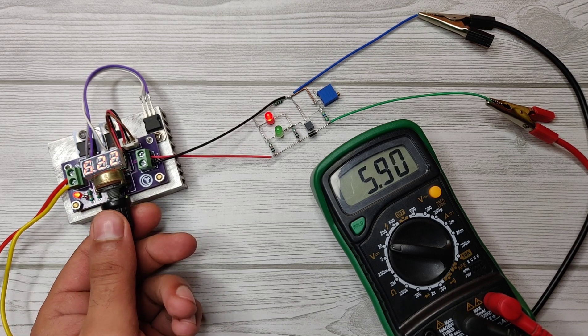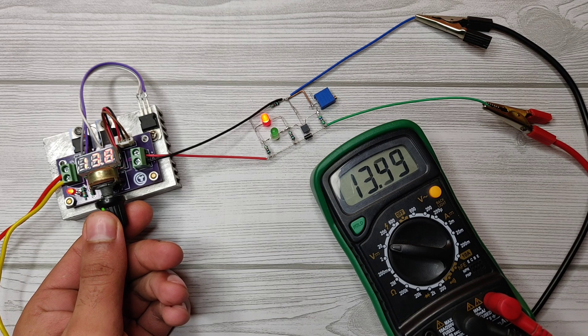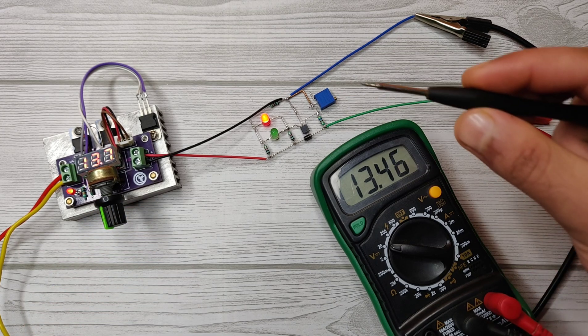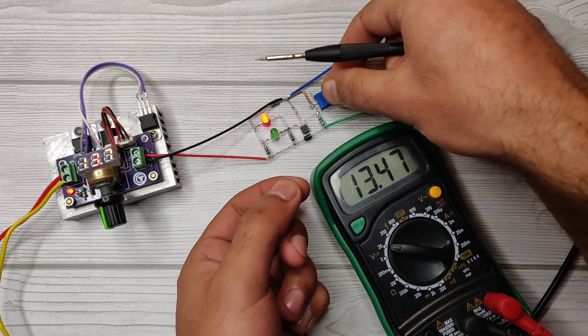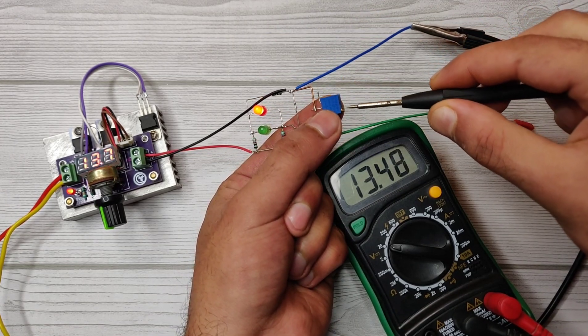Suppose I will calibrate it for 13.5 volts. Set the output at 13.5 volts, then use a screwdriver and adjust the potentiometer clockwise till the green LED turns on like this.